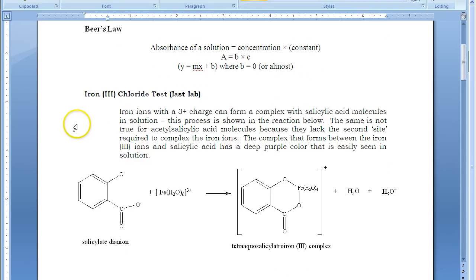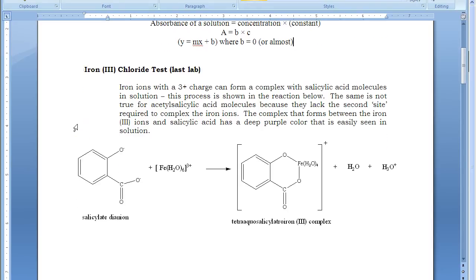We're going to use the iron-3 chloride test that you may recall from aspirin part 2 and then be able to quantify it with UV-Vis spectroscopy. If you remember from your aspirin part 2, when we have salicylic acid or salicylate ions in the presence of iron, which we introduced from iron-3 chloride, we form a complex.